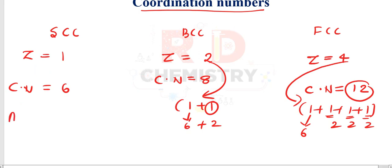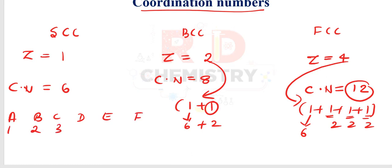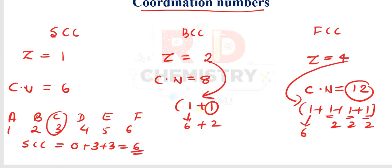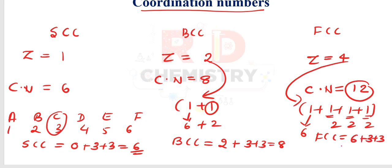Another trick to remember coordination numbers: assign letters A through F with values 1–6. For SCC — S has no value, so take C + C = 3 + 3 = 6. For BCC — B = 2, C + C = 3 + 3, total = 8. For FCC — F = 6, C + C = 3 + 3, total = 12.